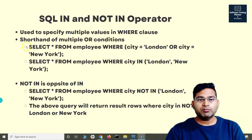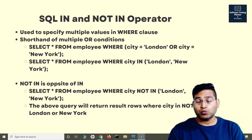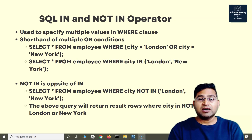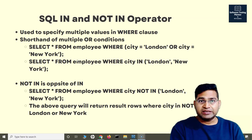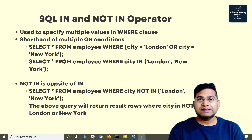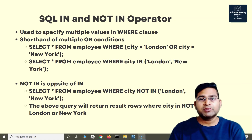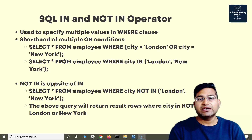IN is essentially a shorthand for multiple OR conditions. So instead of writing SELECT * FROM employee WHERE city is London OR city is New York, you can write SELECT * FROM employee WHERE city IN followed by a comma-separated list of cities in brackets.